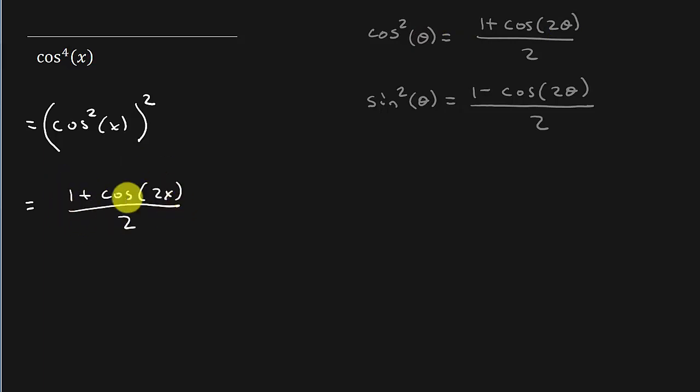Now this part here is just the cosine squared. So we also have to put it in parentheses and square it, all right?